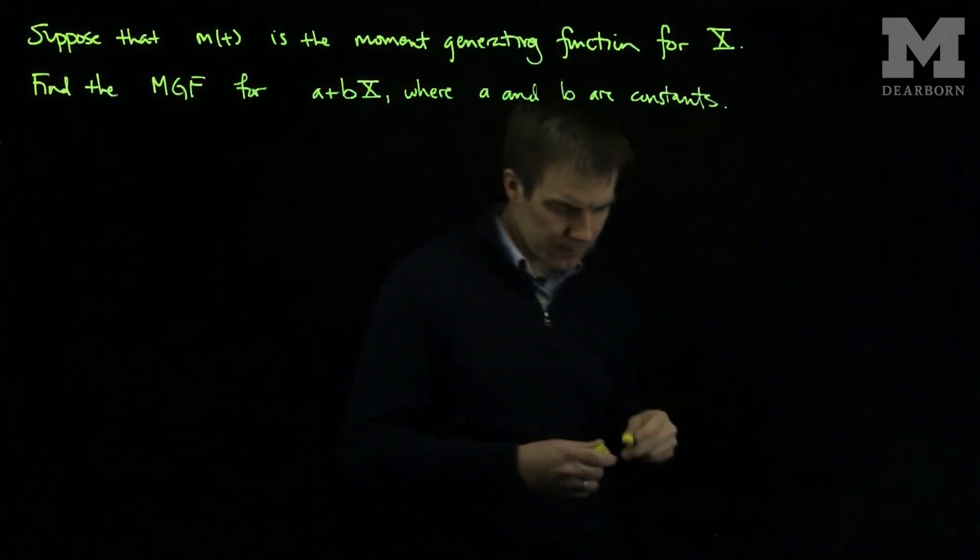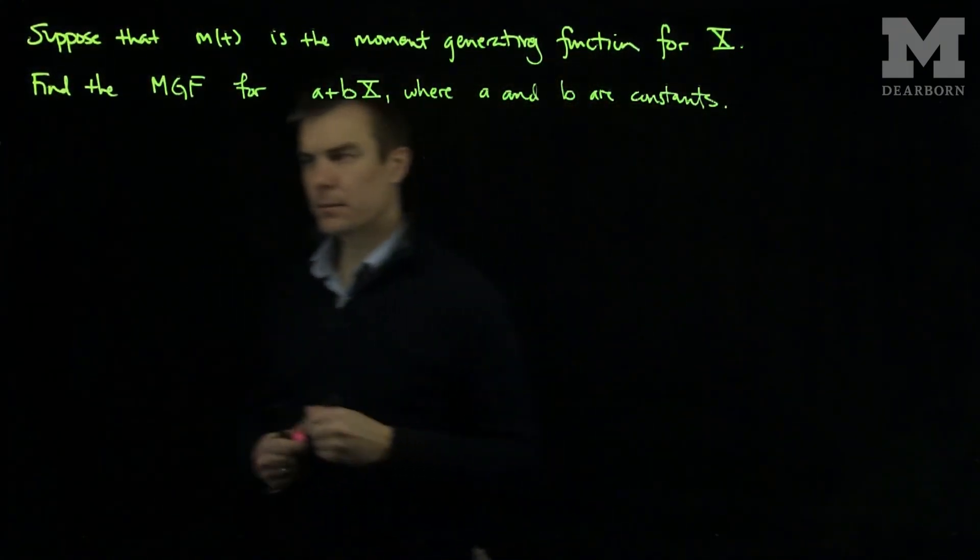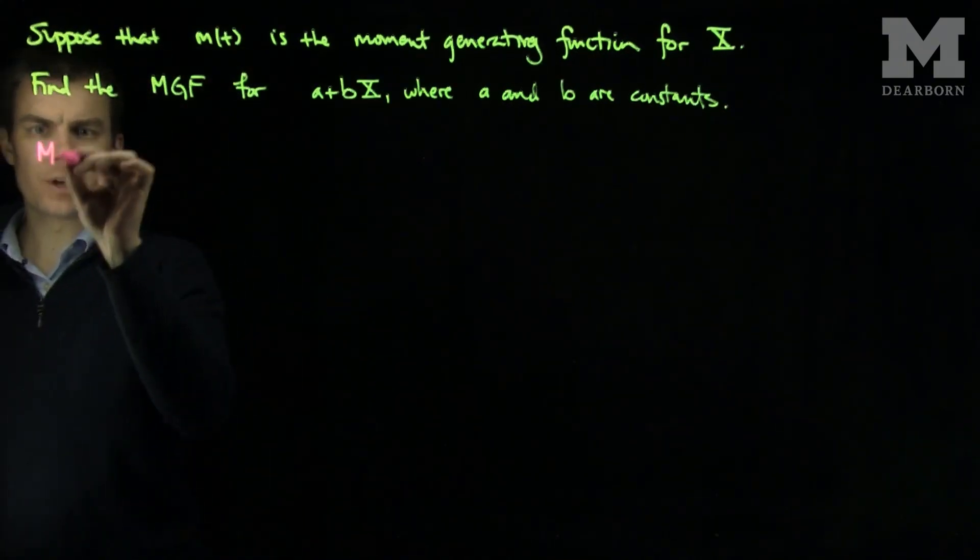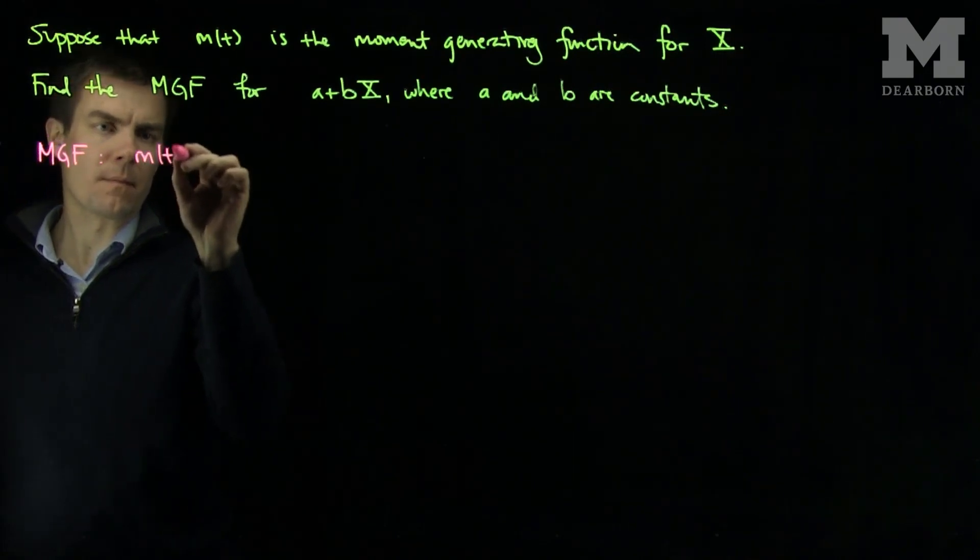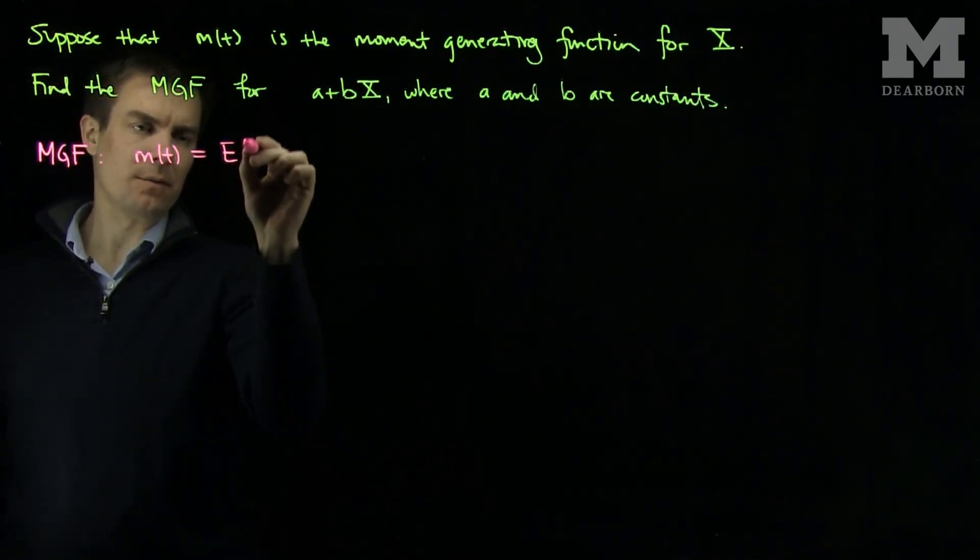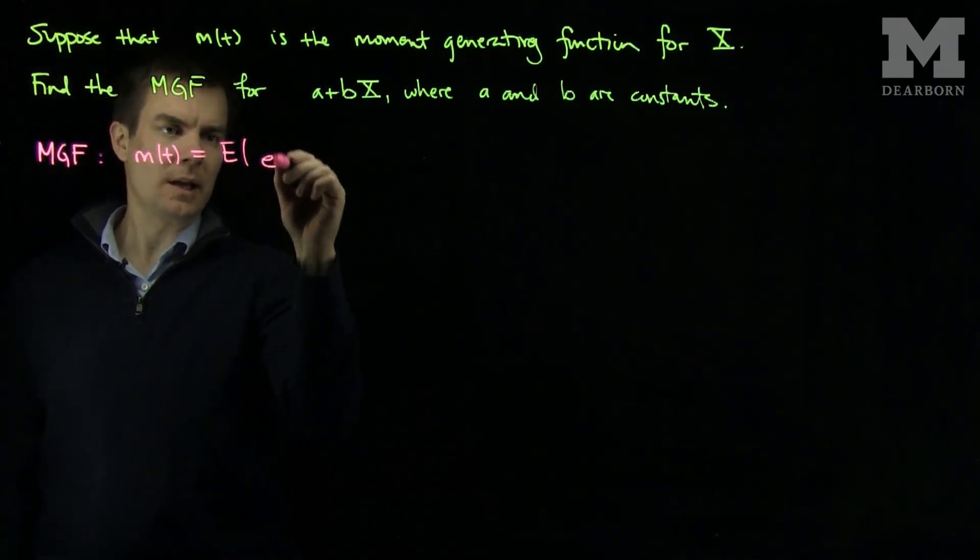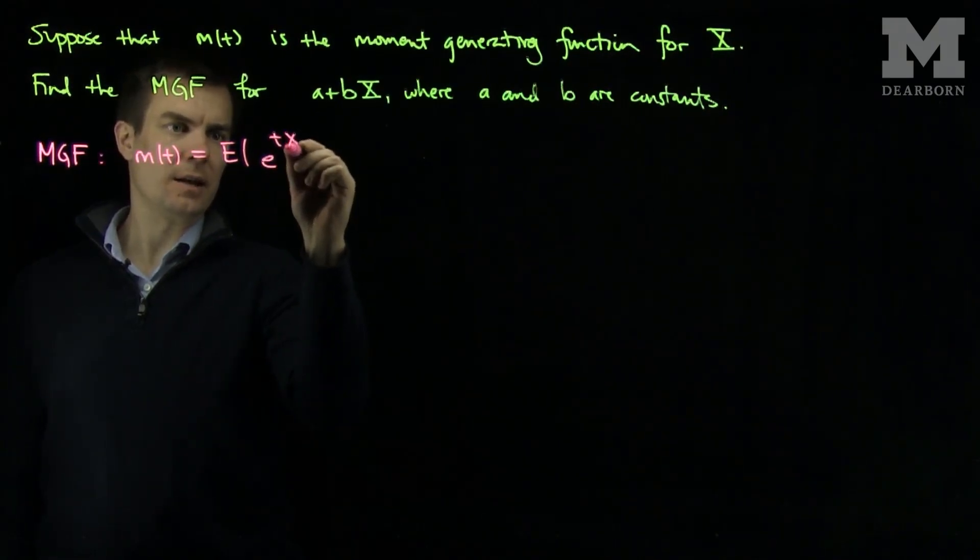We recall that the moment generating function m is the expected value of e to the tX.